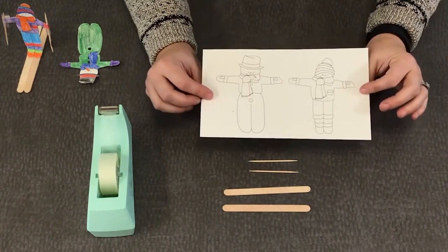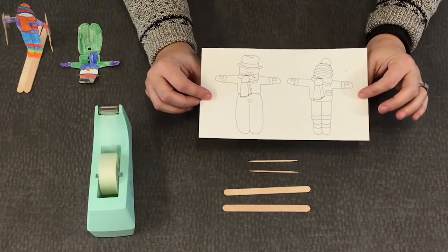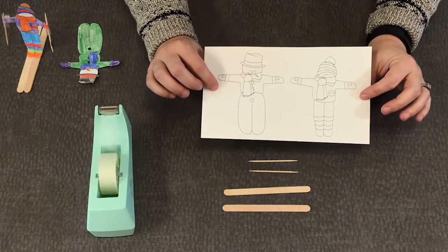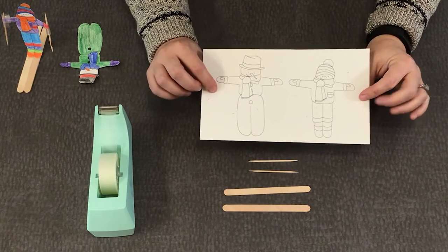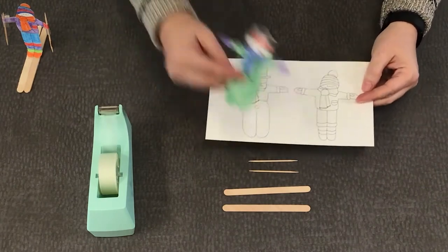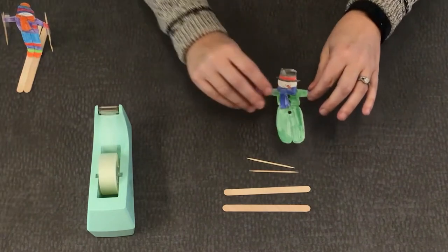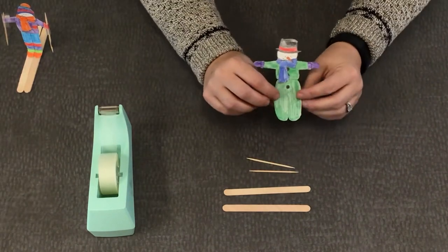You can design them and color them any way you want, and then you need to cut them out. So here is my snowman. After you have your snowman colored and decorated, then it's time to attach the poles and the skis.